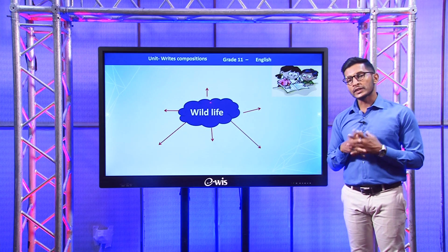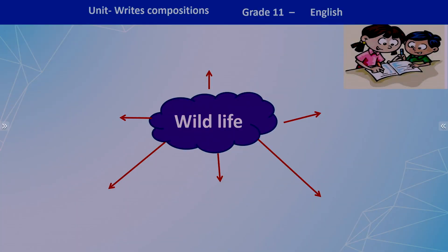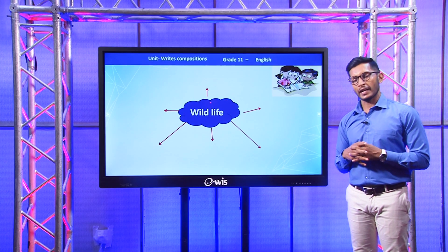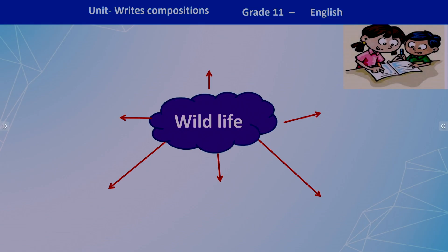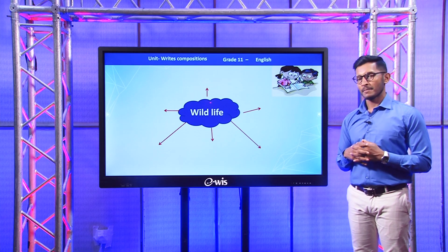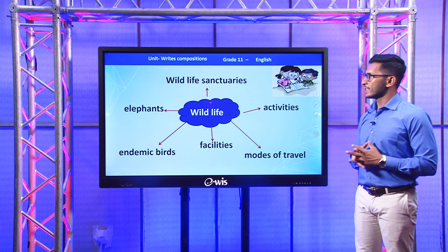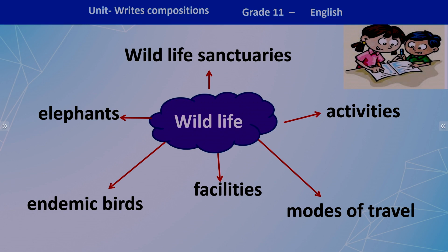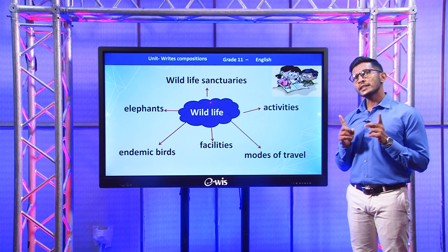So far we have described sentences using the words and phrases from the mind map — you can use those sentences and paragraphs as an introduction for your article. Now let's move on to the body. I have chosen another tourist attraction: wildlife. Sri Lanka is famous for wildlife. Take a few seconds and write some ideas you can use to describe wildlife in your second or third paragraphs. The subtopics I have written are: wildlife sanctuaries, activities, modes of travel, facilities, endemic birds, and elephants.